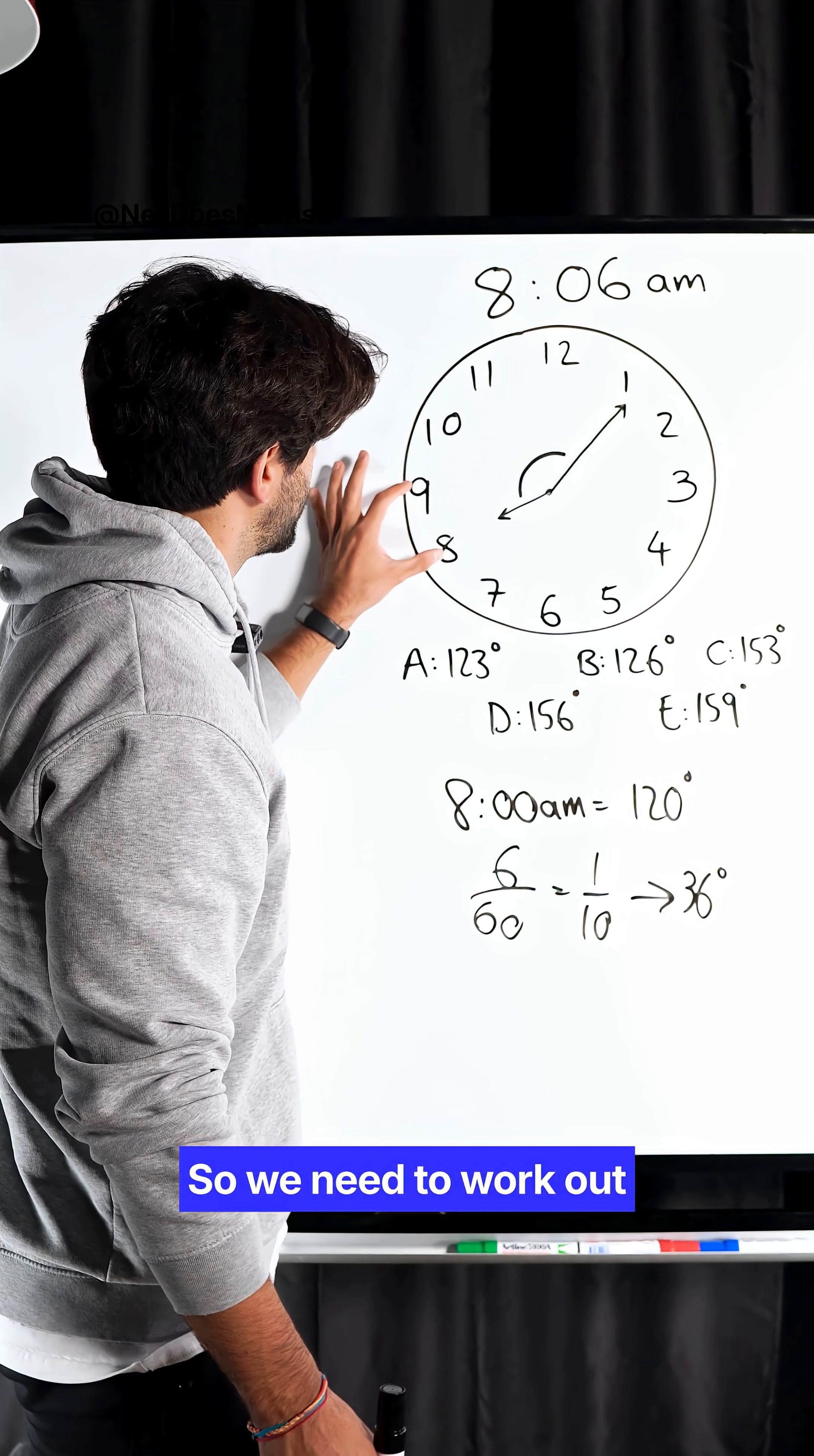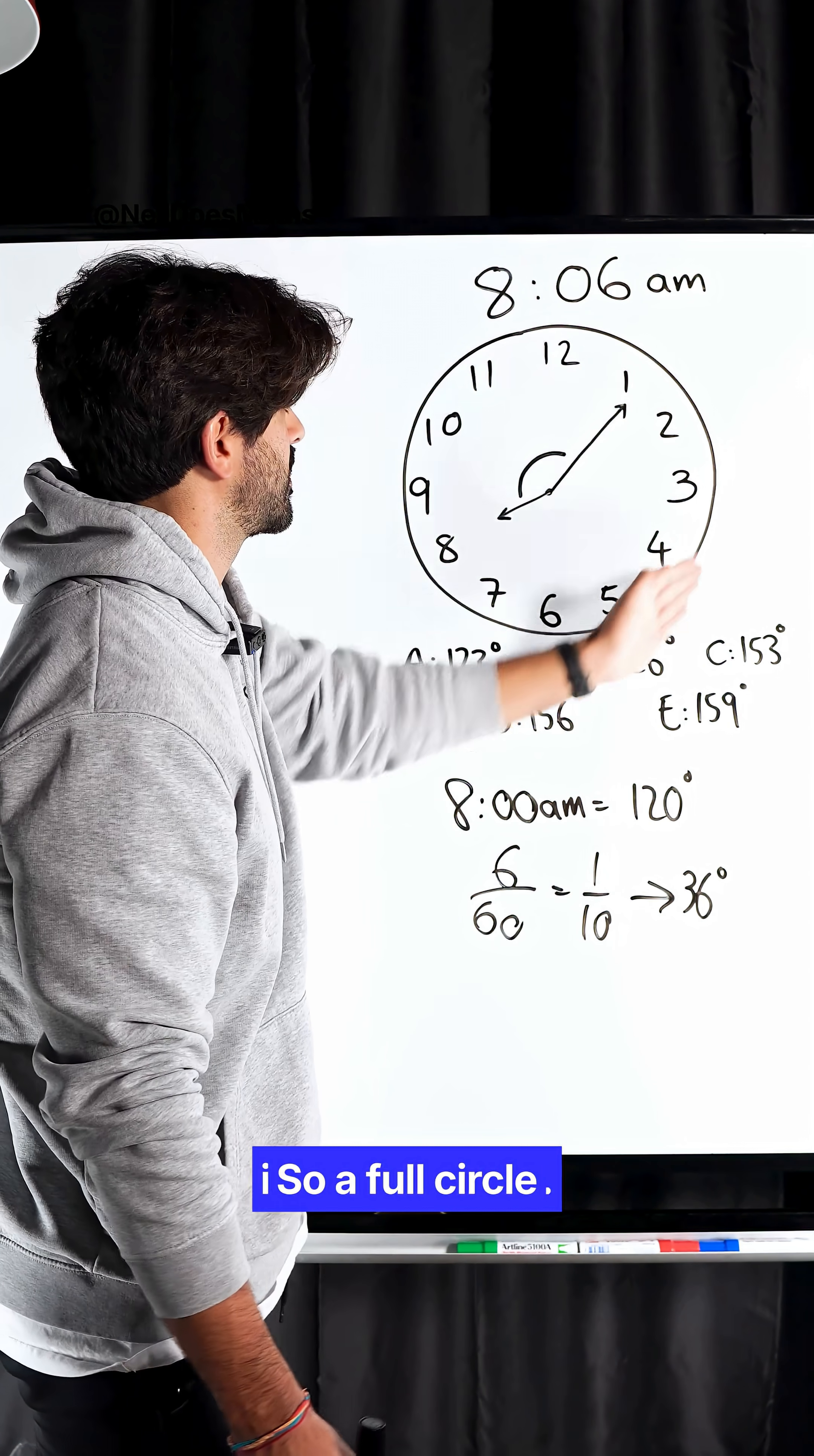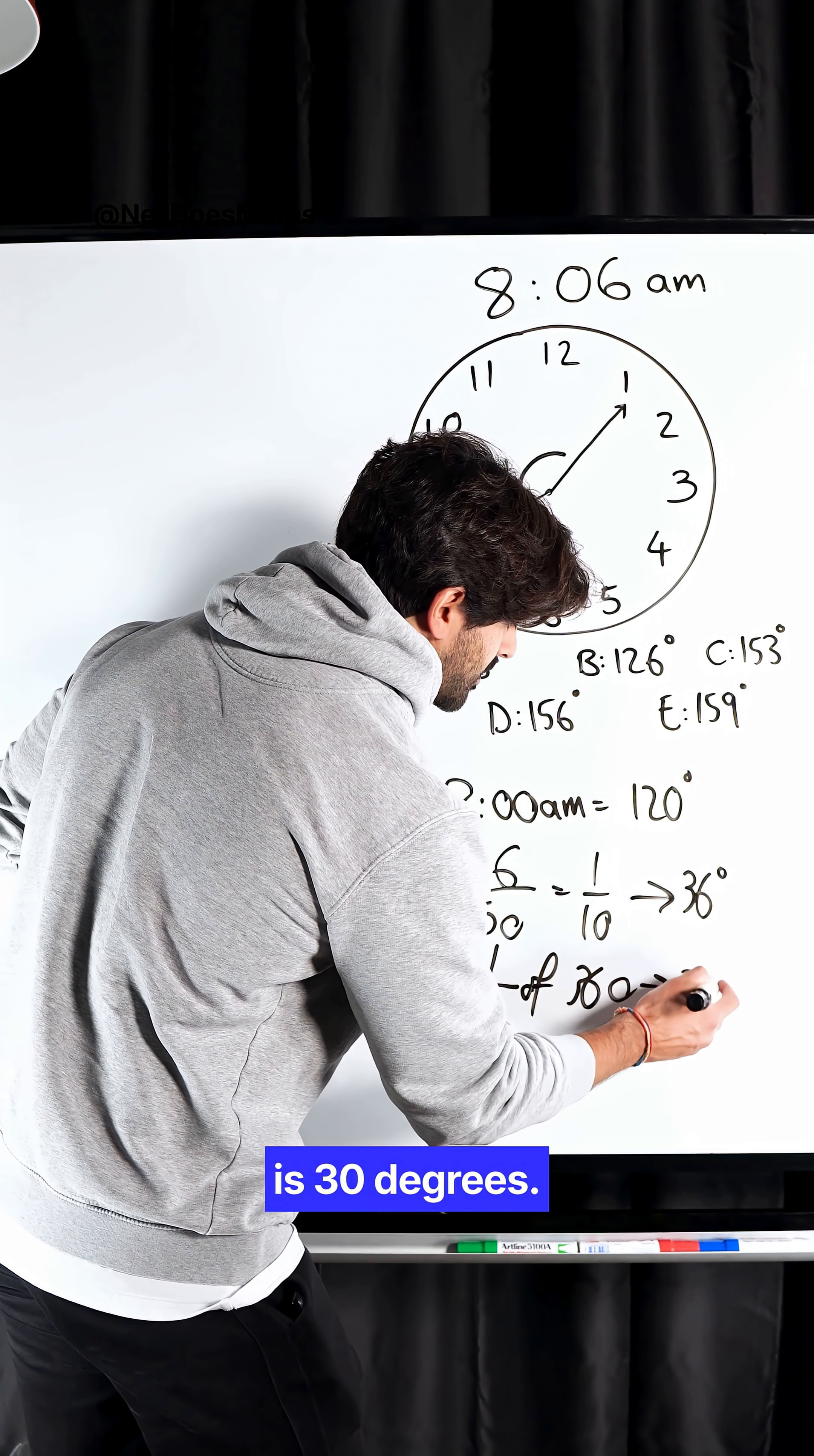We need to work out what's the angle between 8 and 9. That is one-twelfth of a full circle. A full circle is 360 degrees. This gap is 1 out of 12, so we're doing 1 out of 12 of 360. 360 divided by 12 is 30 degrees.